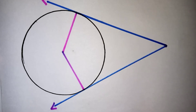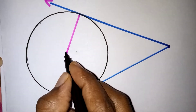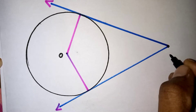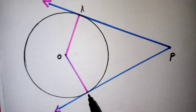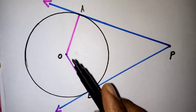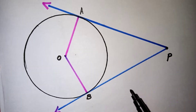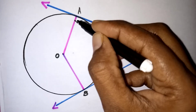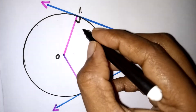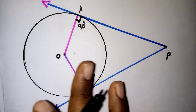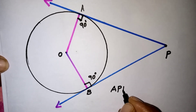Now for another important property: with center O, exterior point P, and points of contact A and B, the figure APBO is a quadrilateral — a four-sided figure. The tangent and radius make 90 degrees at A, and the radius and tangent also make 90 degrees at B, so angle A = 90° and angle B = 90°.